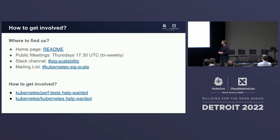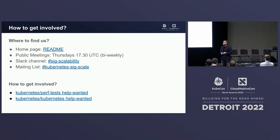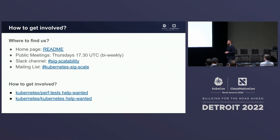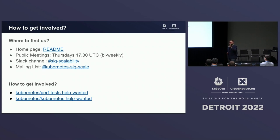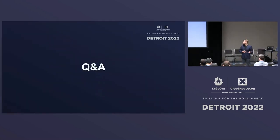To sum up: if you want to get involved, we have a homepage with all the contact information. We have biweekly public meetings and a mailing list. If you want to get involved in our testing infrastructure, we have issues marked as 'help wanted' — you can just pick one up and get involved in the scalability of Kubernetes. And now we have a few minutes for Q&A.